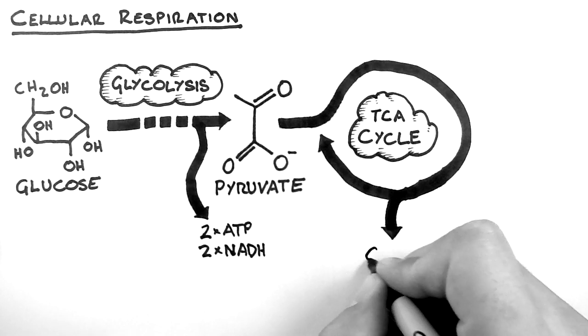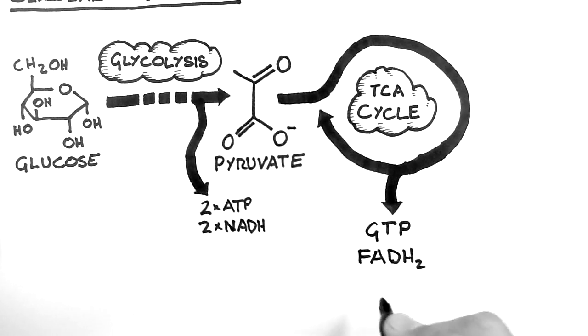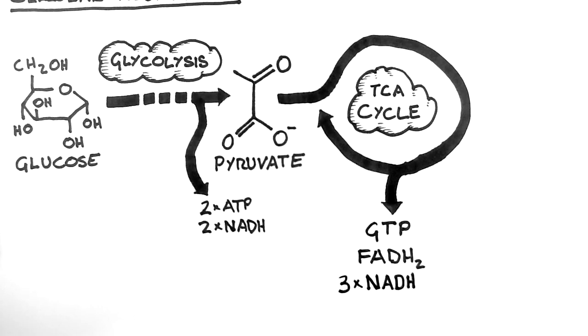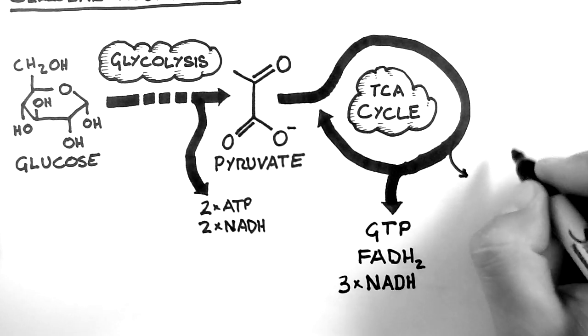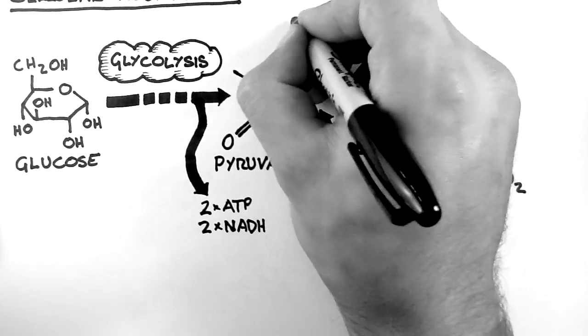The TCA cycle creates a guanosine triphosphate, which is essentially an ATP, an FADH2, which will get turned into ATP later, and three NADH which will also get turned into ATP later. The TCA cycle also produces carbon dioxide as a by-product.